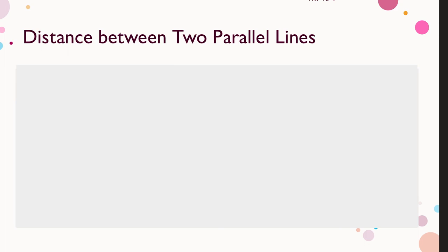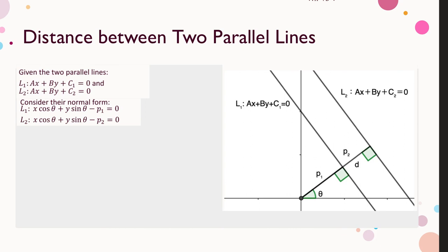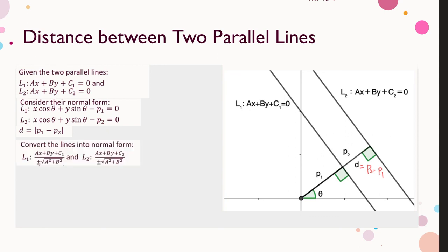Let the two parallel lines be l₁ and l₂. Since the lines are parallel, they share the same coefficients of x and y; the only difference is the constant terms. Converting to normal form, the distance between the two lines is d = |p₂ − p₁|. Converting the lines into normal form, we can express d in terms of a, b, c₁, and c₂.